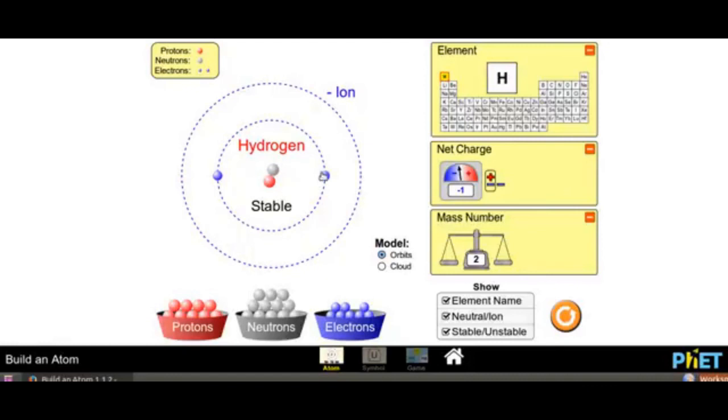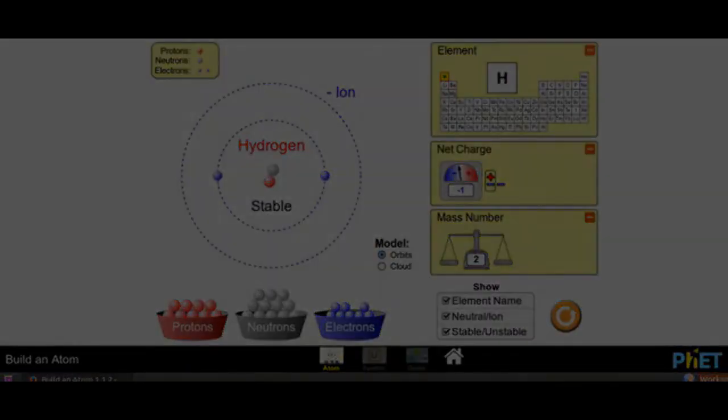Now, what particle is found in orbit? Yes, children. That is electrons, and electrons revolve around the nucleus in an orbit.